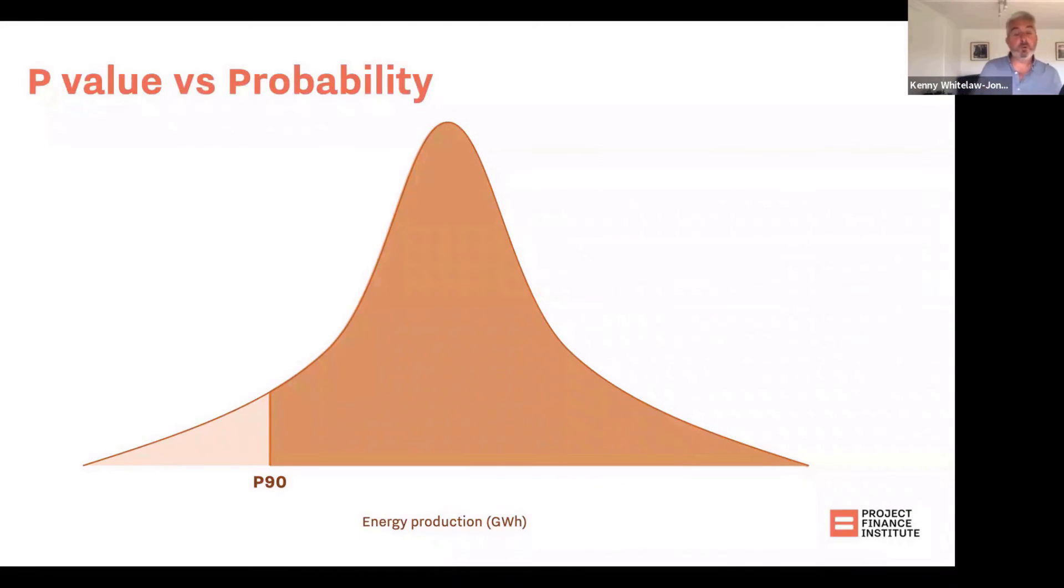Before we do that, I just want to talk about P-value versus probability. We already talked about the P-value being the likelihood of exceedance, right? So P90 has a 90% chance that any given data point will be higher than the P90 value. When we start to use Excel's probability functions, it talks about probability, and it's the remaining 10%.